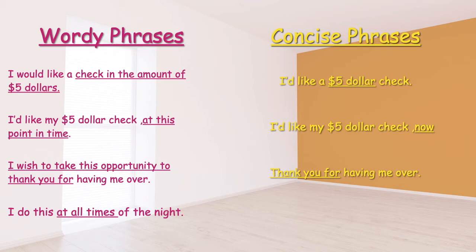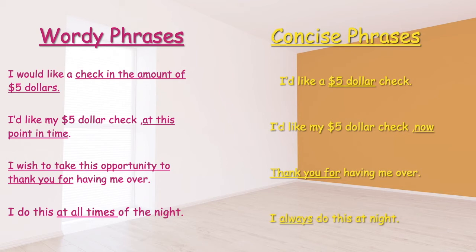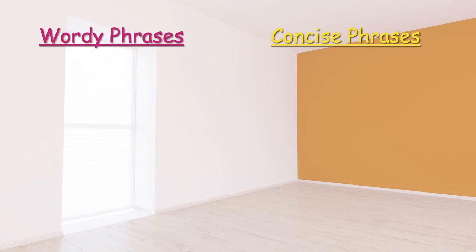Next: 'I do this at all times of the night.' The wordy phrase is 'at all times of the night.' We can economize those three words into just one. If you said 'always,' you're spot on. The concise version is: 'I always do this at night.'